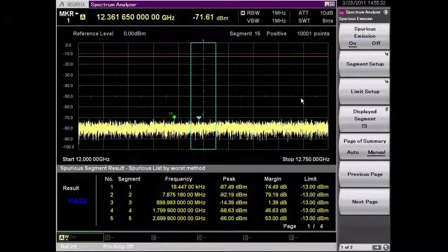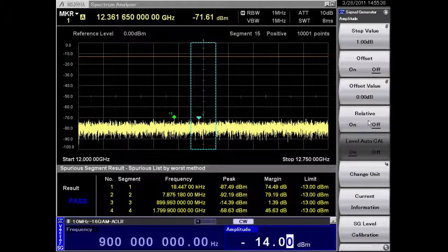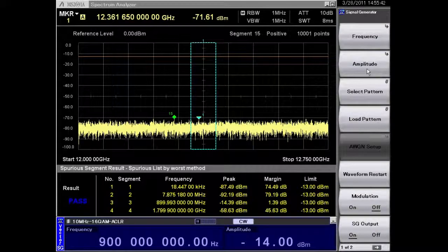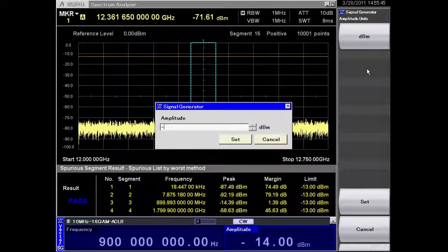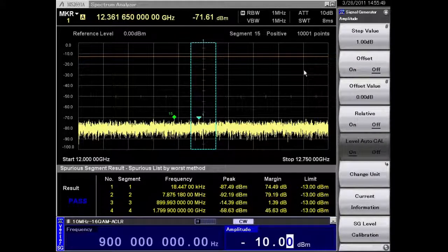So I'm going to change my signal generator power level to create a failing condition. So I'll make that minus 10 dBm and I'm going to sweep again.